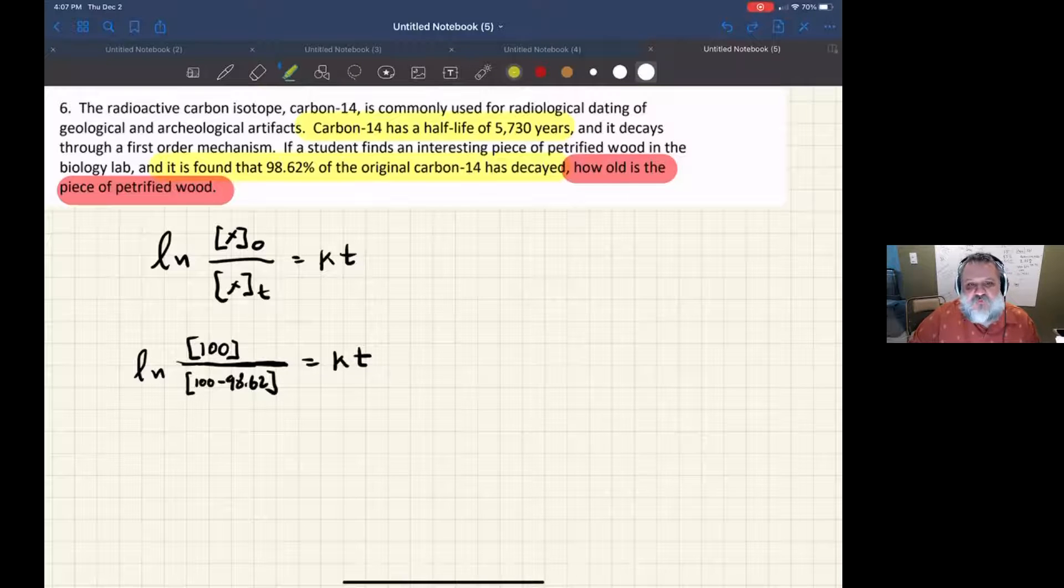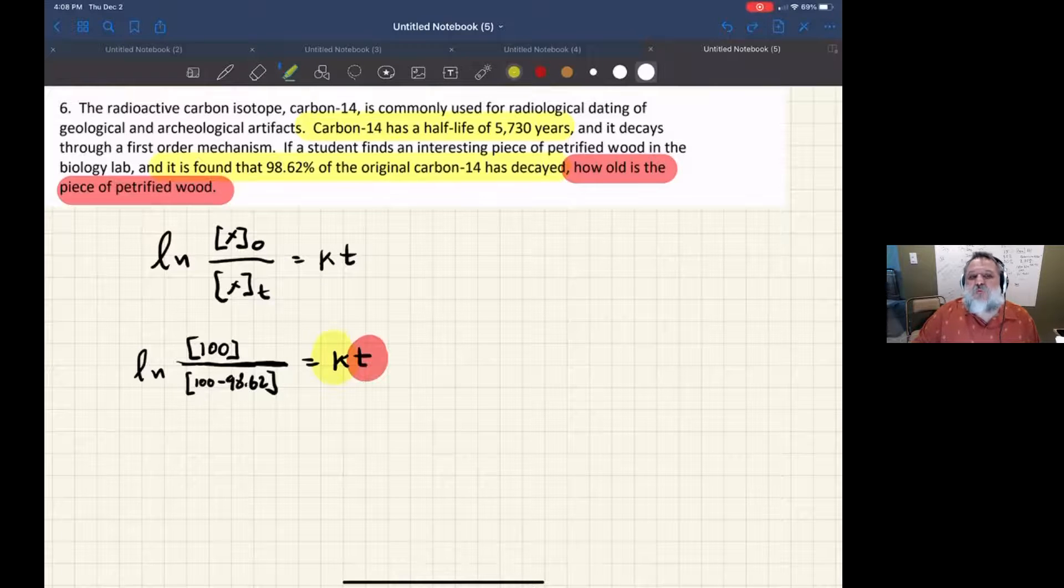So we're looking for t. But there's a problem - we don't have k, so I can't solve this equation without it. However, giving you the half-life is also giving you the rate constant.